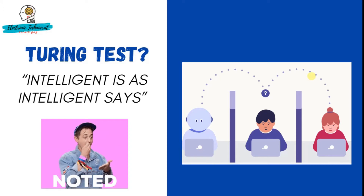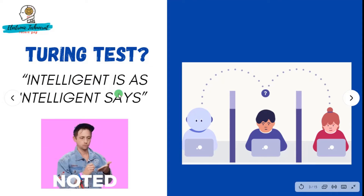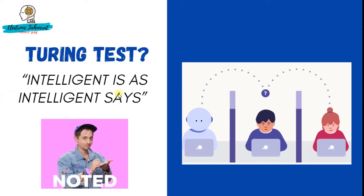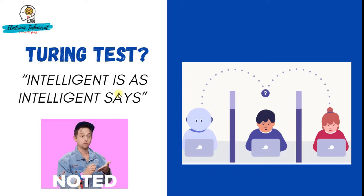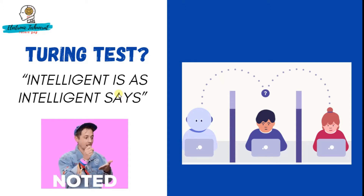What Turing meant by the test is very similar to the aphorism by Forrest Gump: 'Stupid is as stupid does.' In Turing's version, it would be 'intelligent is as intelligent says.' In other words, an entity is intelligent if it cannot be distinguished from another intelligent entity by observing its behavior. Turing constrained the set of behaviors to discussion, so that the interrogator can't base their decision on appearances — making it very difficult to know which was a computer and which was a human.